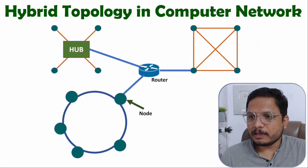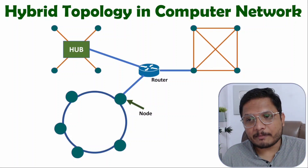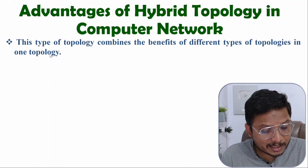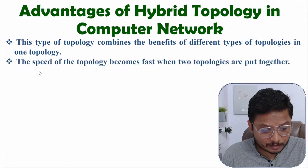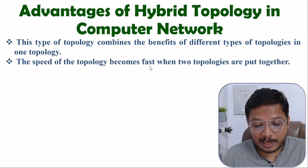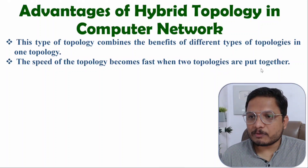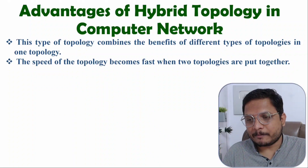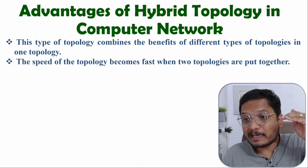Now I'll explain the advantages of hybrid topology, followed by the disadvantages. In this type of topology we combine the benefits of different types of topologies into one topology. The speed of this topology becomes very fast as we combine two or more topologies together. In hybrid topology we combine various topologies like mesh, star, and bus, and you should understand how exactly hybrid topology gets installed in a computer network.